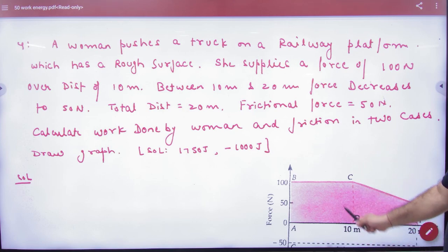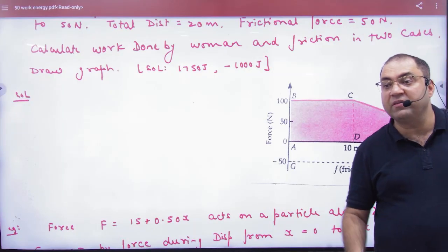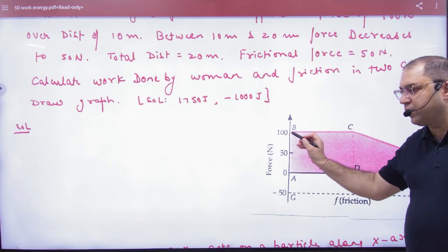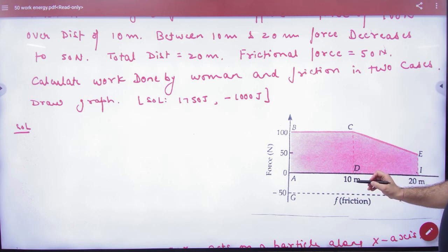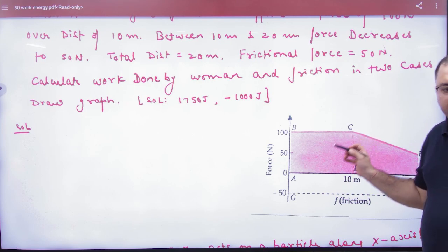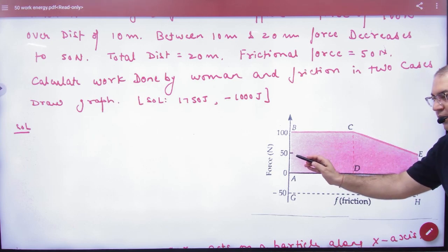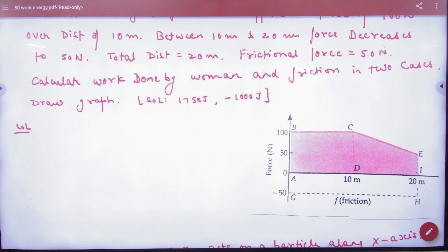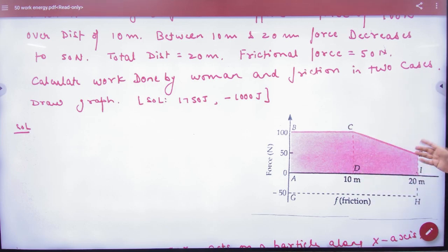Draw the F-S graph. The graph shows a constant 100 Newton force for the first 10 meters — a straight horizontal line. Then the force drops from 100 Newton to 50 Newton between 10 meters and 20 meters. So the graph is clear: 100 Newton constant up to 10 m, and then decreasing to 50 Newton from 10 to 20 meters.